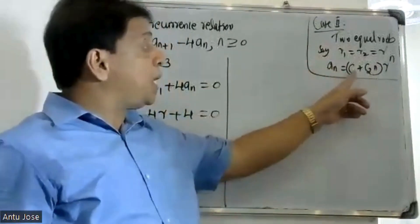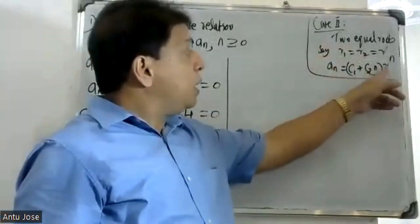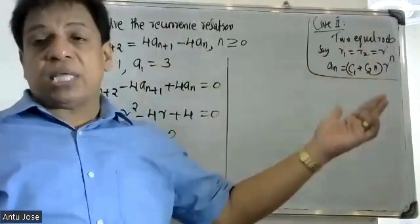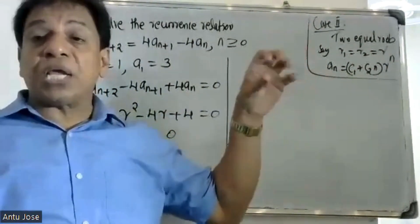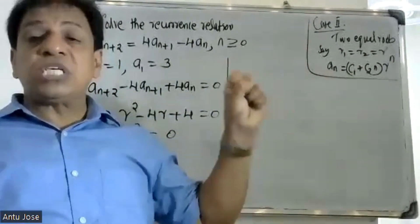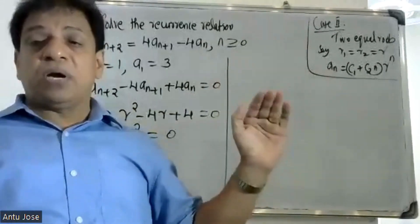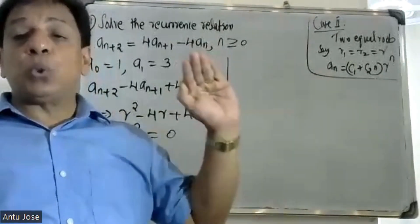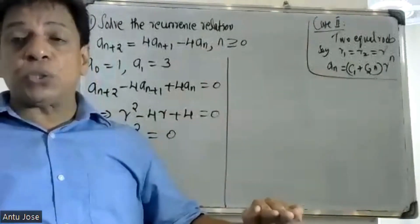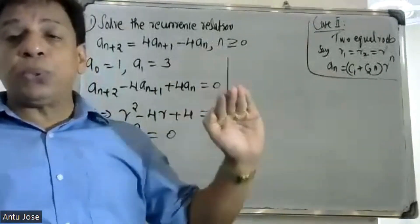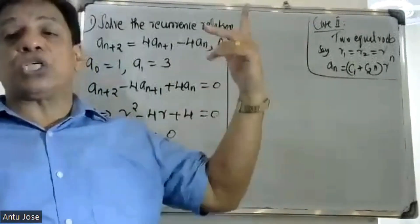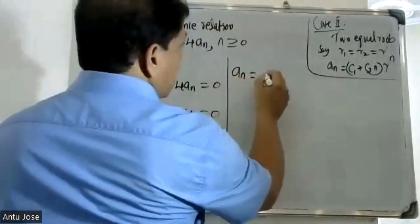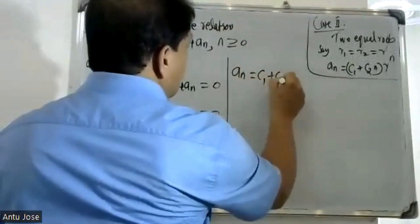Since the roots are repeated, the general solution takes the form a(n) = (C1 + C2·n) · 2^n.